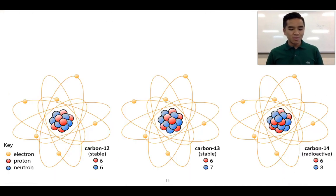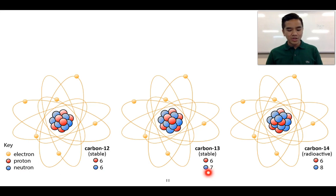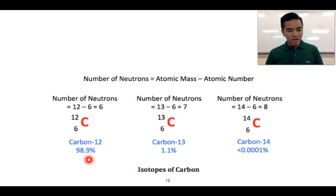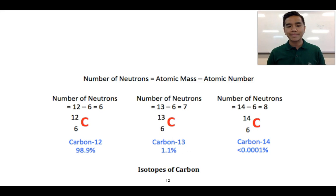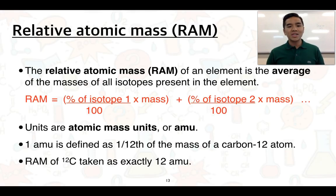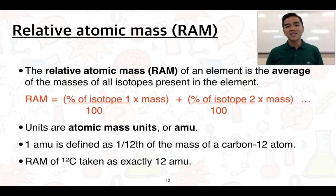Many elements in nature exist as a combination of different isotopes. Carbon, for example, exists in three different forms: carbon-12, carbon-13, and carbon-14. These carbon atoms differ only in the number of neutrons — carbon-12 has 6, carbon-13 has 7, and carbon-14 has 8. In terms of percentage abundance, carbon-12 makes up 98.9% of all carbon, carbon-13 about 1.1%, and carbon-14 is extremely small at 0.0001%. The relative atomic mass (RAM) for an element is the average of all the masses of the different isotopes, weighted by how prevalent each isotope is.